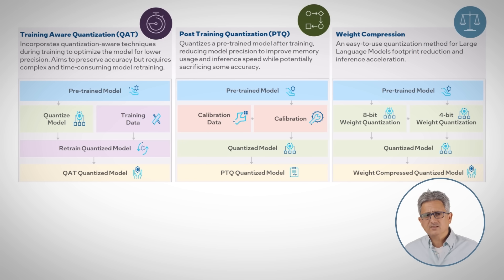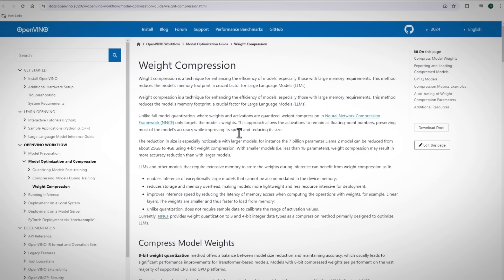Weight compression compresses only the weights, so all the activation functions will still work using their original format, probably floating point. The reduction in size is impressive.